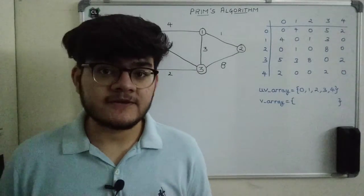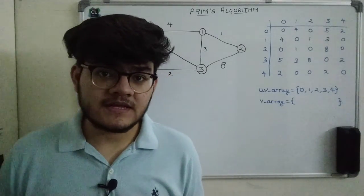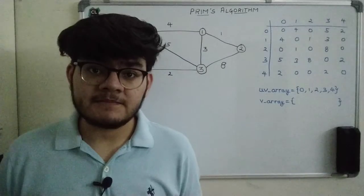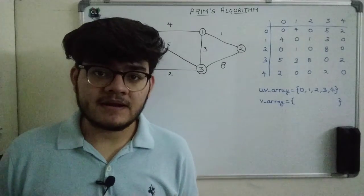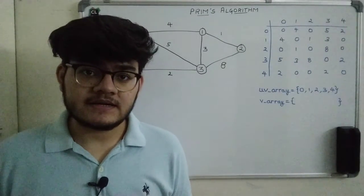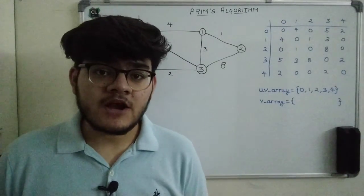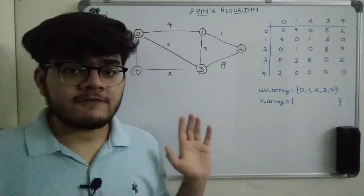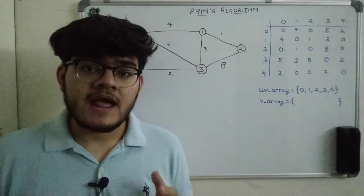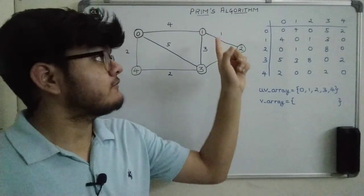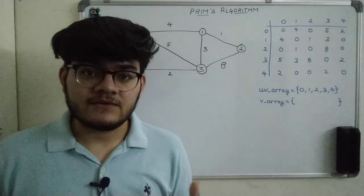In this tutorial we are going to study Prim's algorithm and also implement it programmatically. We have already seen in previous tutorials all the spanning trees that can be generated from this given graph. Now we will implement Prim's algorithm to find the minimum spanning tree, and you can also implement it in C++ — the link is in the description below.